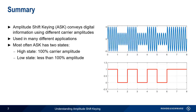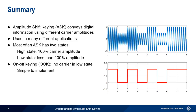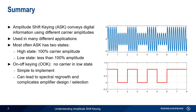This lower state may be only slightly lower than full amplitude, or it may involve turning the carrier off completely, something called on-off keying. On-off keying is popular because it's very simple and inexpensive, but it can also lead to wider signal bandwidth or spectral regrowth, and complicates the selection and design of amplifiers. This concludes our presentation, Understanding ASK.